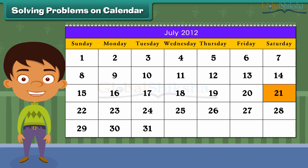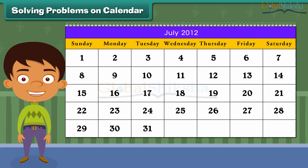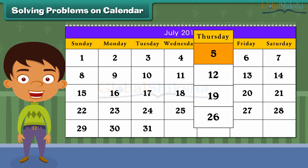Is the 21st a Sunday? No, it is not a Sunday — it is a Saturday. How many Thursdays are there in this month? Yes, there are four Thursdays in this month.